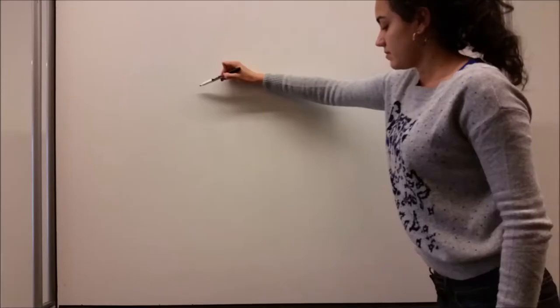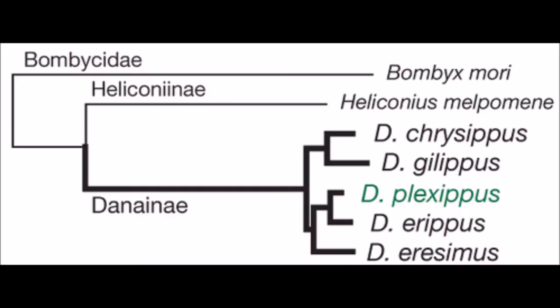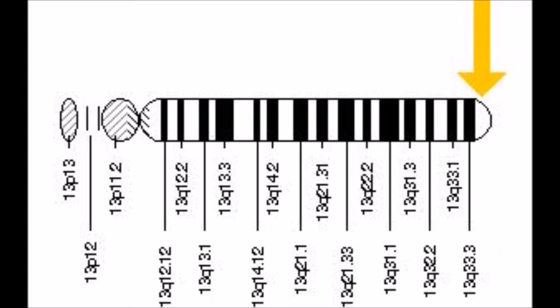Marcus Kronforst and his colleagues from the University of Chicago decided to investigate this magnificent phenomenon. They sampled 101 butterflies — 92 of the Danaus plexippus and 9 of the other four Danaus species — and analyzed them by identifying differences in the genome, which can be done via the population branch statistic.